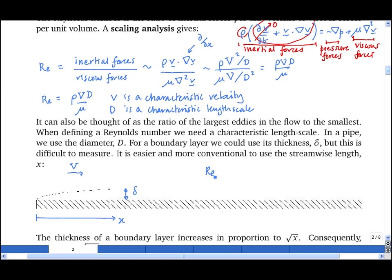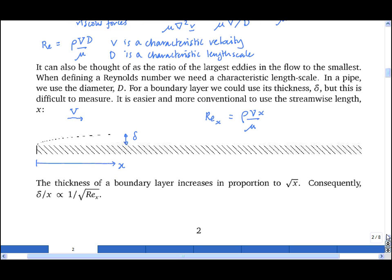and then use this distance as the characteristic length scale. So the Reynolds number in the boundary layer is often given subscript x, is defined as rho v x upon mu, where x is the distance from the leading edge. And we know already that the thickness of a boundary layer increases in proportion to the square root of x. Consequently, the thickness of the boundary layer delta divided by x increases in proportion to 1 upon the square root of this Reynolds number.